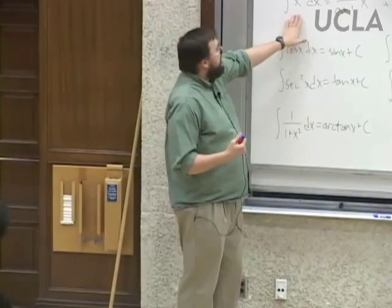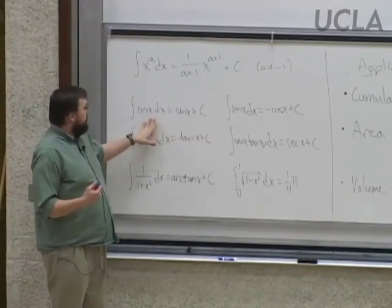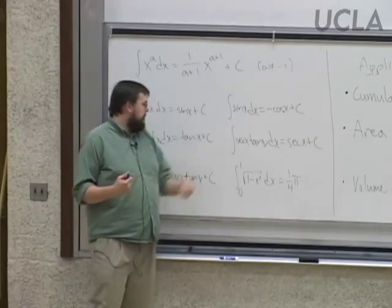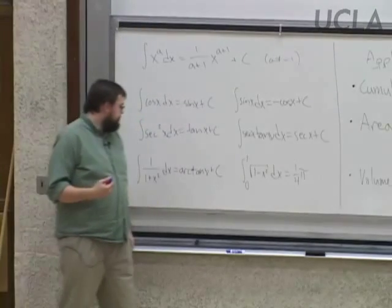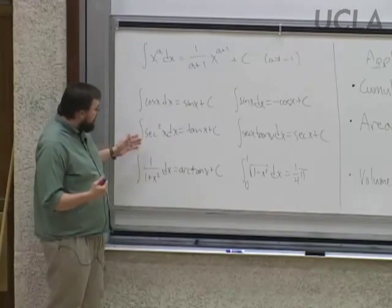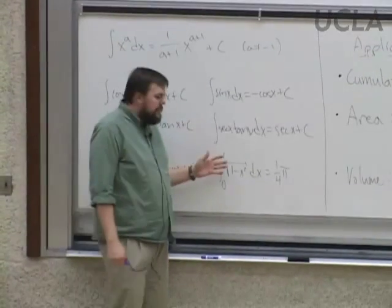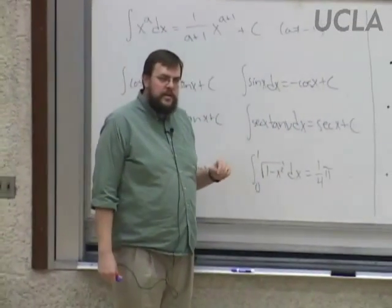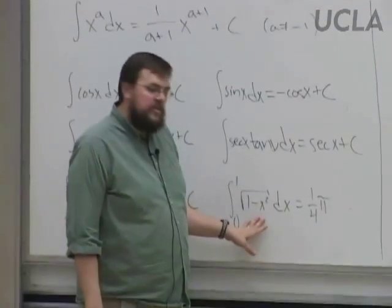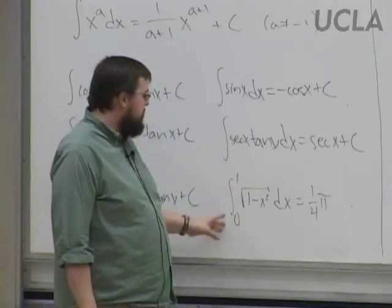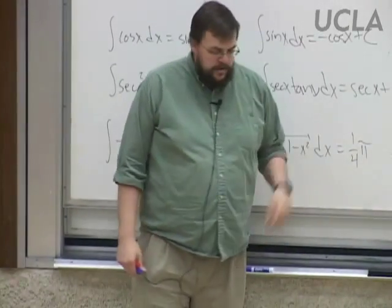Namely, powers of x — x to the a — we can integrate that: that's 1/(a+1) · x to the a+1. We can integrate cosine, we get sine. We can integrate sine, we get negative cosine. We can integrate secant squared, we get tangent. We can integrate secant times tangent, we get secant. We can even integrate 1 over (1 plus x squared), which gives us arctangent.